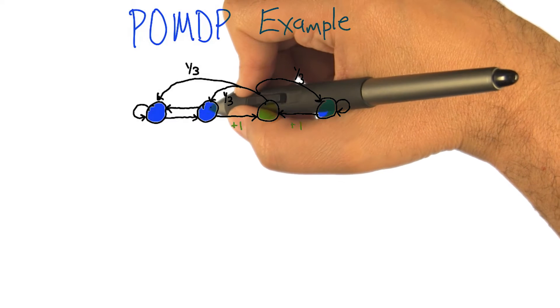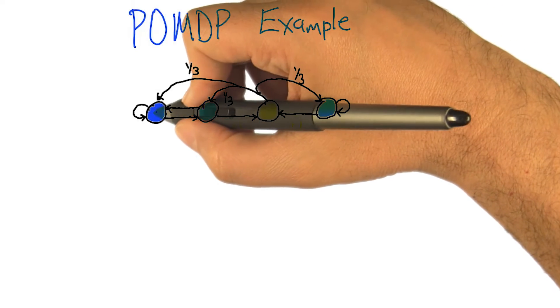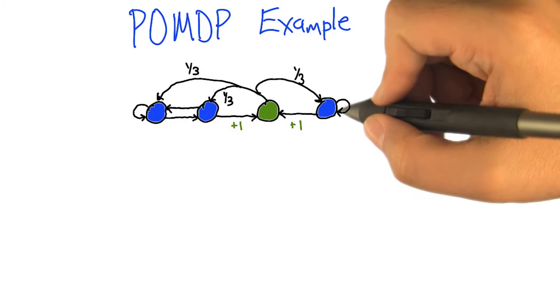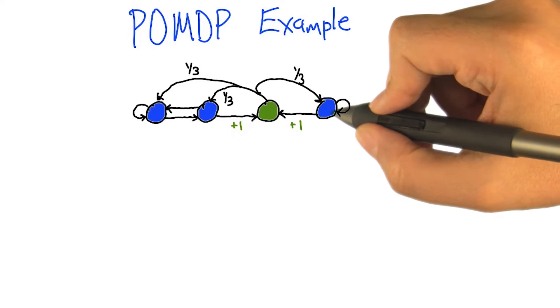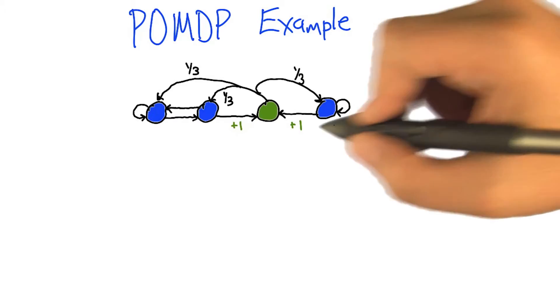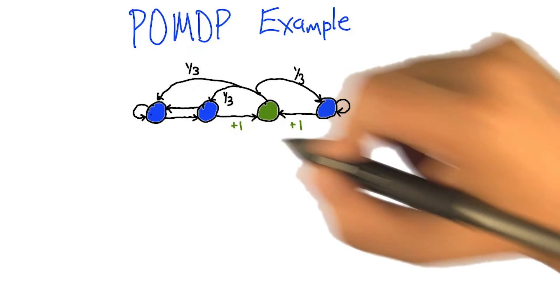And otherwise things move left and right. At the end of the hallways here, these two end states, if you try to go right when there's no more space to go, you just stick where you were. And if you try to go left when there's no more space to go, you stick where you were.